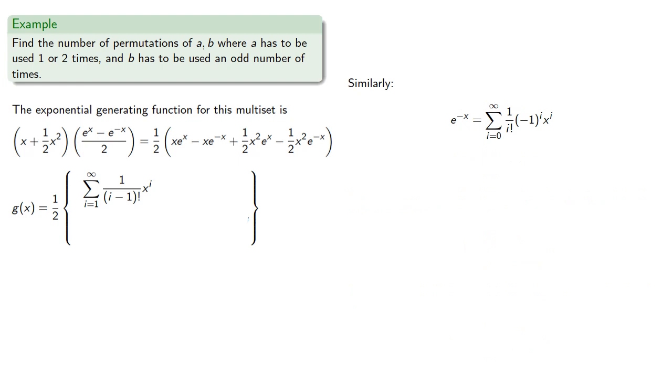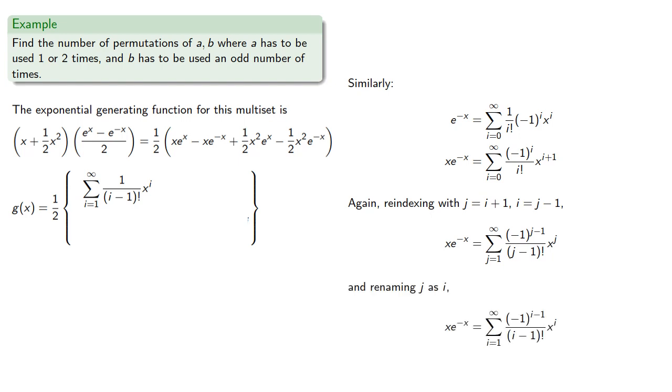Similarly, e to the negative x will be given by its series, and so x e to the negative x will be its product. Again, re-indexing with j equal to i plus 1, and so i equals j minus 1 gives us the reindexed form.